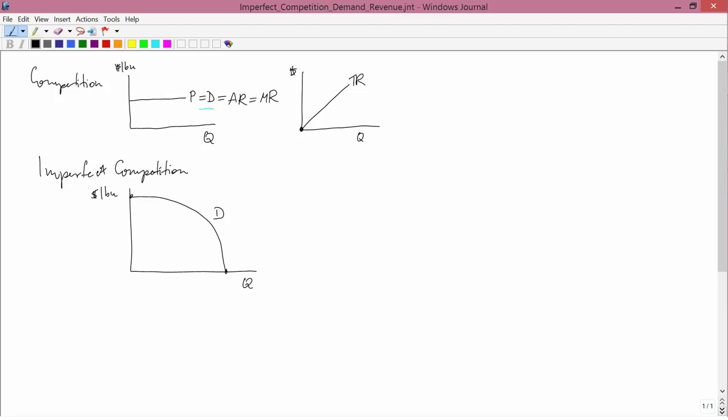So how about imperfect competition? Well, the first result is going to be such an important one, I'm going to type it up. The demand curve is always equal to the average revenue curve. The word always means I don't care if you're talking about competition or imperfect competition. The demand curve is always equal to the average revenue curve. Let's see why.